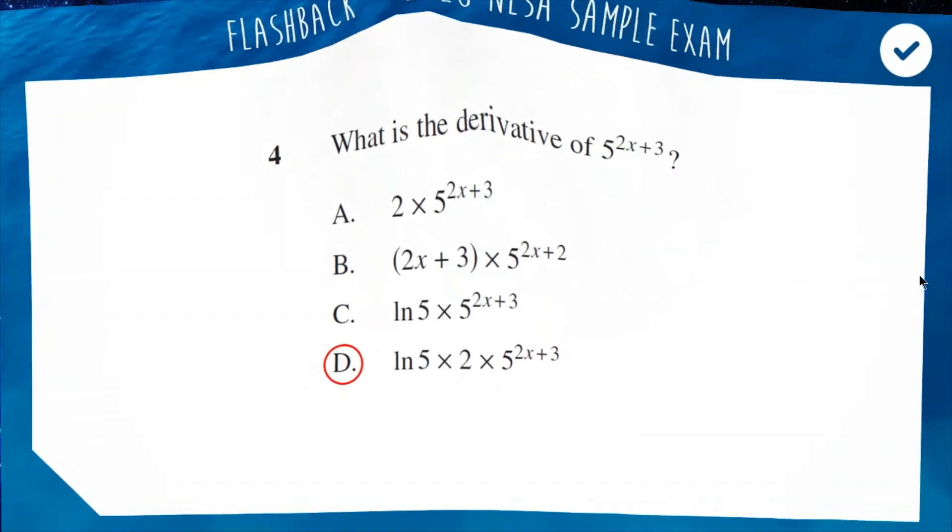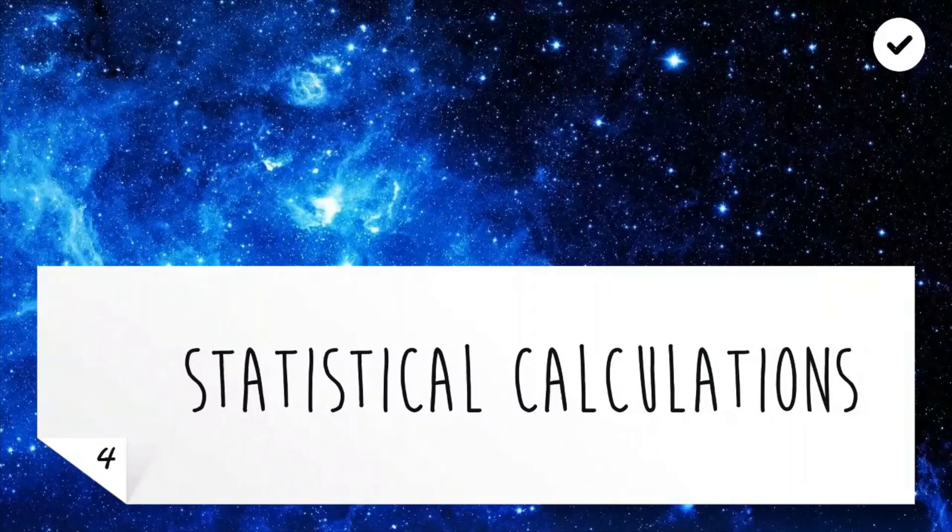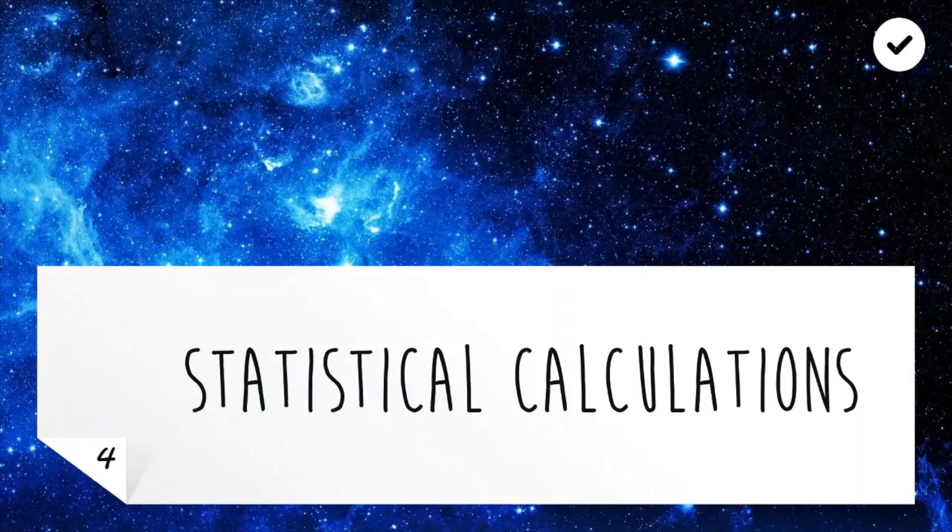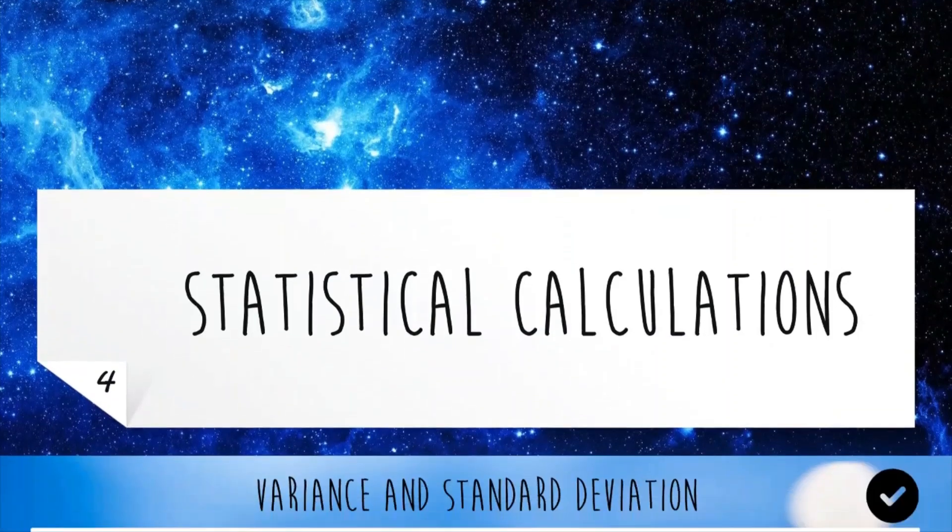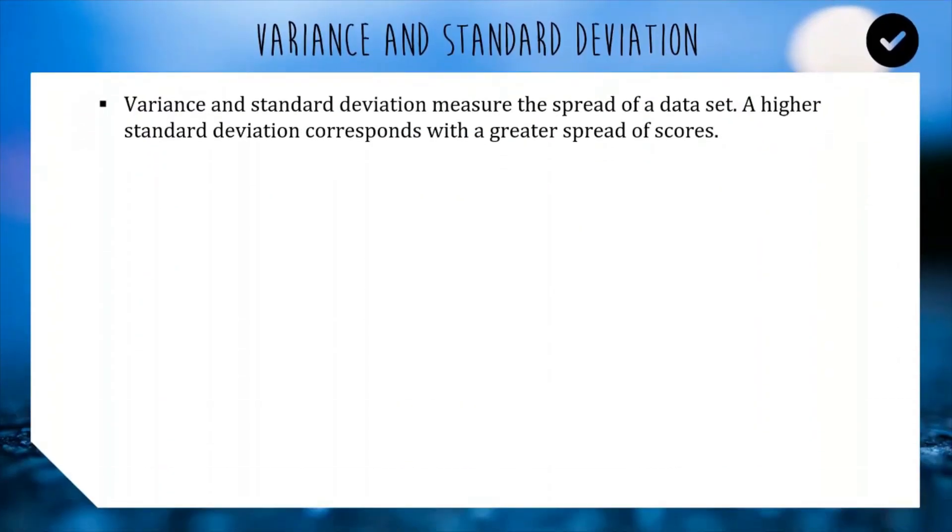Today we'll be diving into statistical calculations. The focus of today is basically how to compute statistics with your trusty Casio calculator. First thing I wanted to talk to you guys about today is variance and standard deviation, which are two concepts we did look at in the discrete probability function topic, but today we'll be calculating those based off scores rather than functions.